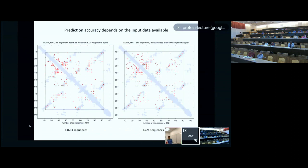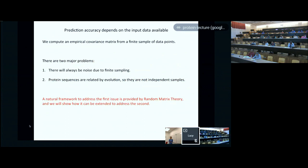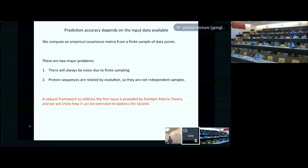Whenever we're computing an empirical covariance matrix from a finite sample of data points, we have this issue of noise due to finite sampling. For protein sequences, we also have another issue—they're related by evolution, so they're a long way from being independent samples. The sample covariance matrix is in general the maximum likelihood estimate of the true covariance matrix, but if we don't have IID samples, we clearly have a big source of noise. I want to make the argument that a natural framework to address this finite sampling issue is provided by random matrix theory, and I want to show that you can extend this theory to address the second problem—the phylogeny issue.